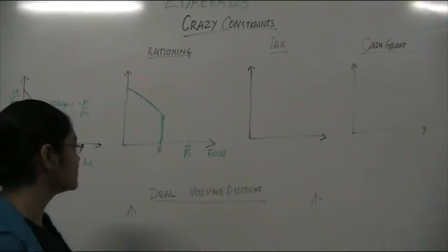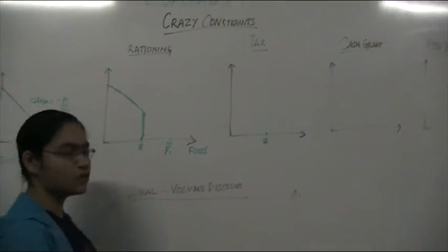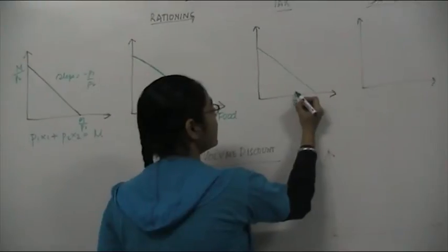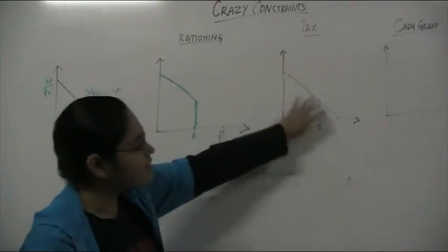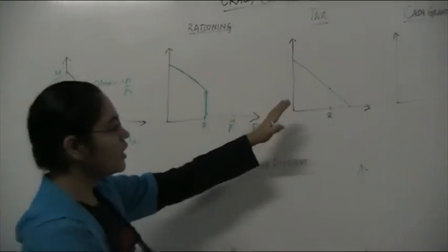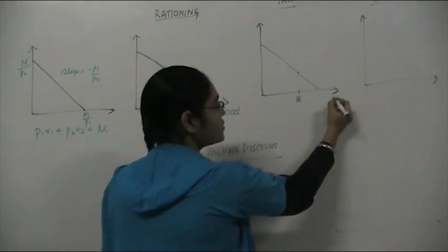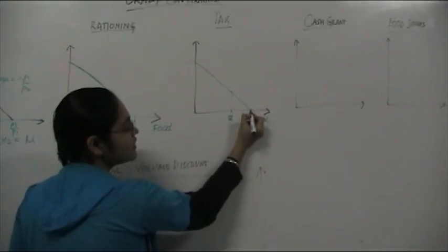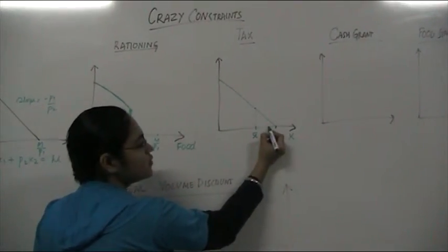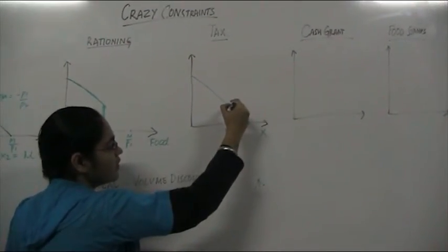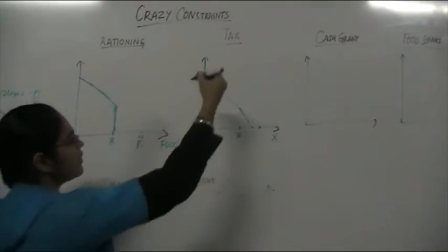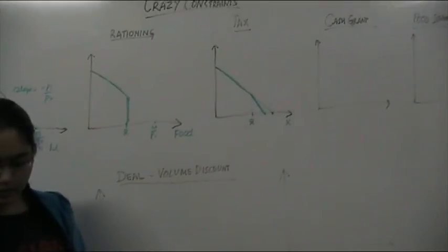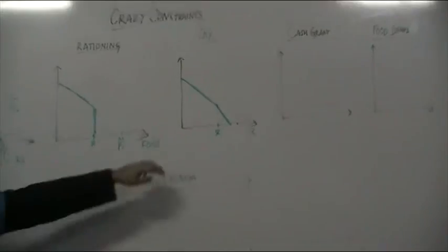Now let's look at the case of a tax. Let's say the government says that after x-bar units of a good, there will be a tax levied. Which means if your budget constraint is like this, after x-bar units this price ratio p1/p2 does not hold — the good x becomes expensive. Now you know when a good becomes expensive, the budget line pivots inwards, which means you cannot have the maximum amount of x but somewhat less. Your budget constraint pivots inwards from x-bar, and the final budget constraint looks like this: it's the normal budget constraint until x-bar, and the pivoted budget constraint after x-bar — with the kink at x-bar.